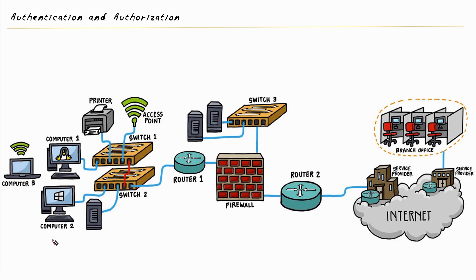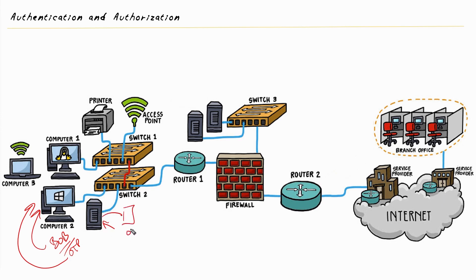Let's use the Bob example again. For Bob's authentication, we require a password and also a one-time password. He gets out his key fob or software application that generates the code, puts in his username, his normal password, and supplies the one-time password. On the back end, the server can refer to an external server for the one-time password to verify whether Bob's one-time password is correct, or it could be an additional service running on the same physical hardware—doing an additional check to verify Bob is who he says he is.